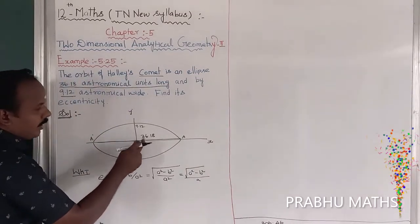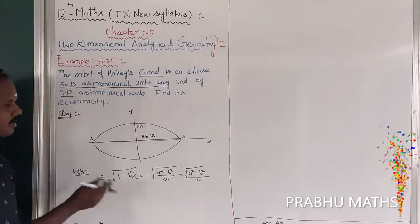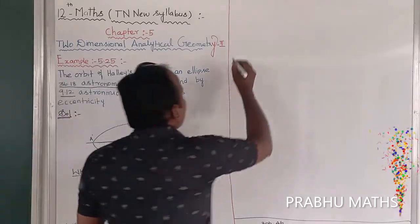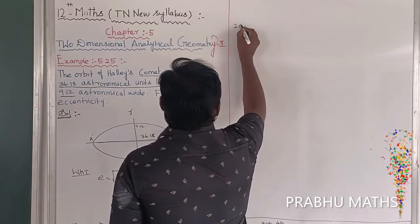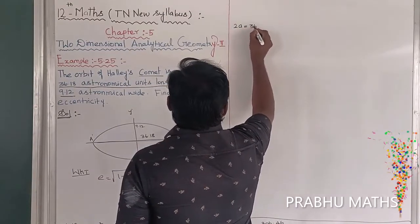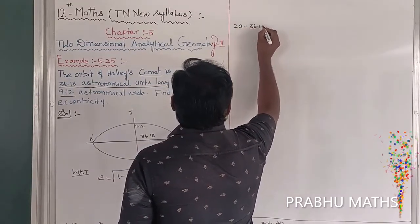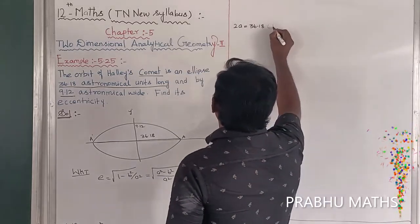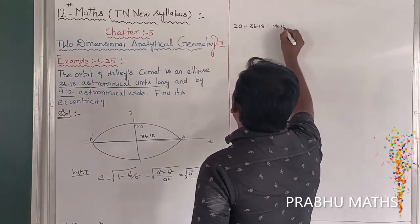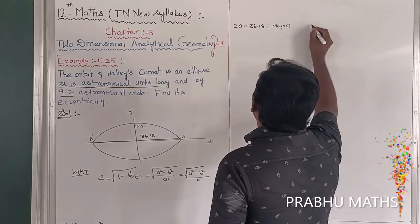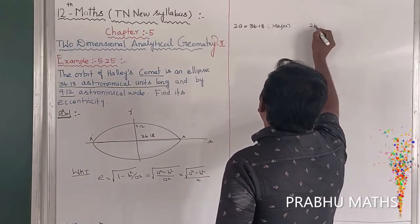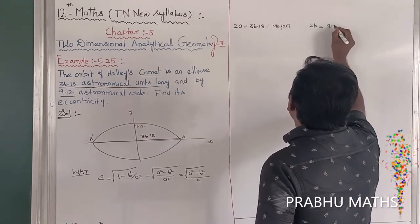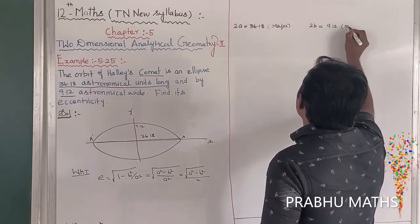Along the major axis (x-axis), the total length is 36.18, so 2a = 36.18. The minor axis gives us 2b = 9.12.